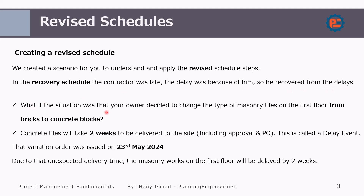We created a scenario for you to understand how to apply the revised schedule. In the recovery schedule, the contractor was late and the delays were because of him. What if the situation was that the owner decided to change the masonry tiles for the first floor from bricks to concrete blocks? Assuming that the concrete blocks will take two weeks to be delivered on site, including approval, PO, and so on. The variation order was issued on 23rd of May. Now we have two weeks that we are expecting to procure the material, and then we can start the relevant activity.